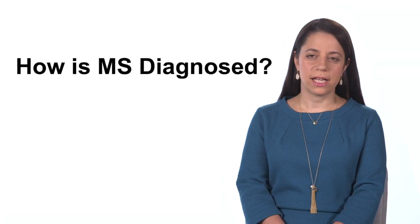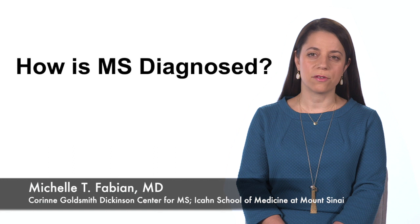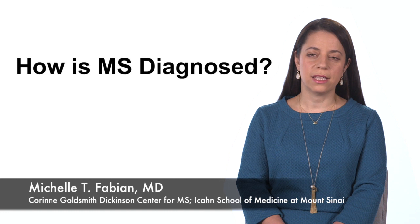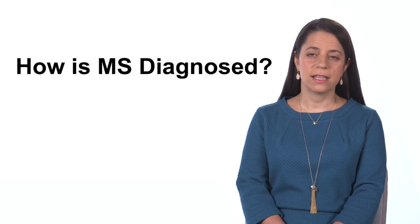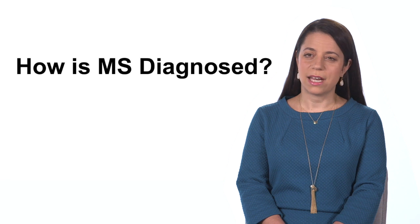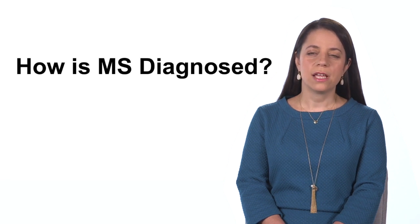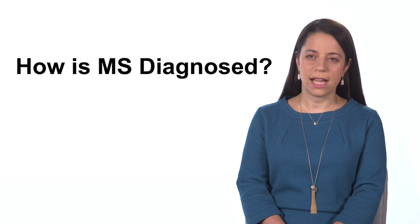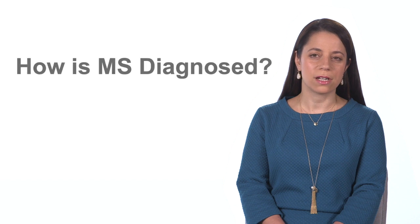Now that we have MRI, thankfully it gets misdiagnosed much less often. But every time we diagnose a patient we have to be meticulous in thinking through what we call the differential diagnosis — that would be the list of other conditions that a person could have. We think about whether they could have a vitamin deficiency, another autoimmune condition, a medication side effect, or another toxicity. There are other things a patient can have, but it's been very fortunate now that we have MRI that we're much more accurate in our diagnosis.